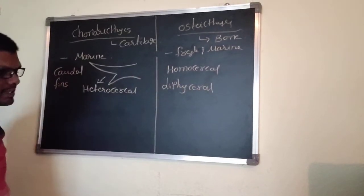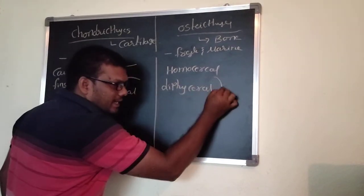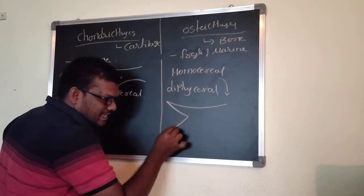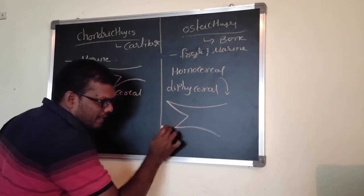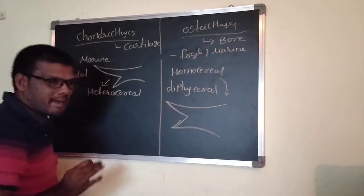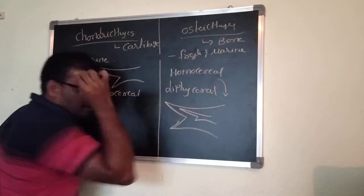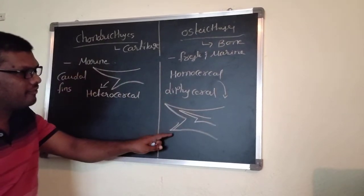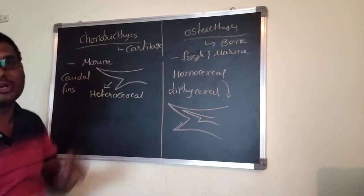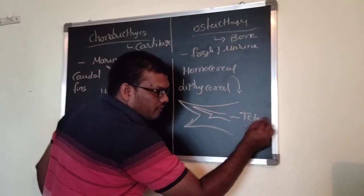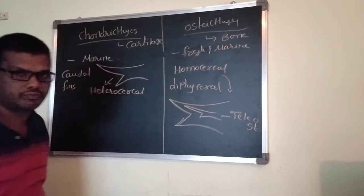Homocercal means the caudal fins externally equal manner, internally unequal manner. This type of caudal fin is called homocercal. It can be seen in the teleost fishes.